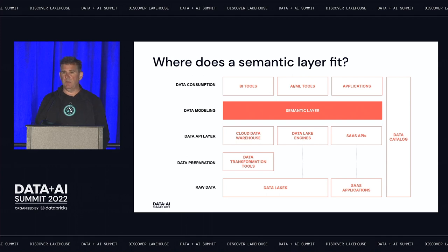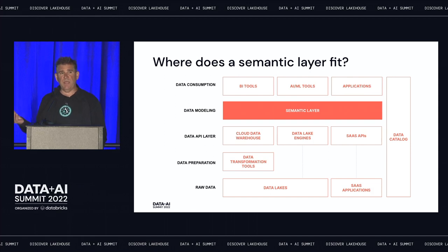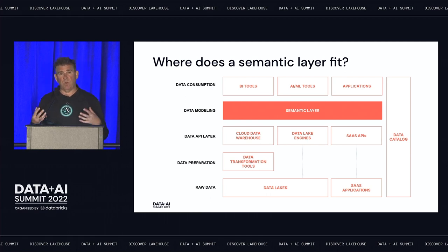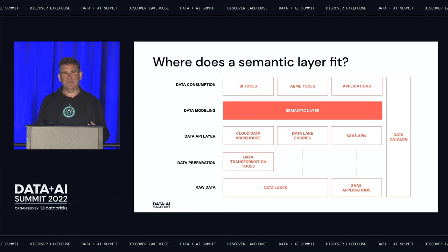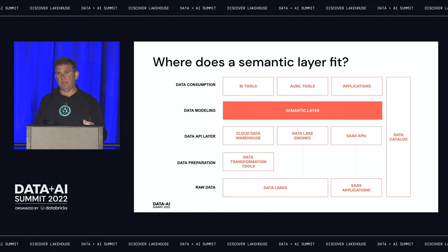On the data API layer, you could be talking to a cloud data warehouse, a data lake like Databricks Lakehouse — which is the demo I'm giving today — or data locked away in SaaS applications like Salesforce, ServiceNow, and NetSuite. All those are data sources that would require a consumer to know how to connect and understand how data is represented before they can get a simple number like revenue for last month. The semantic layer also interacts with an enterprise data catalog, which is a great way of making semantic layers discoverable.